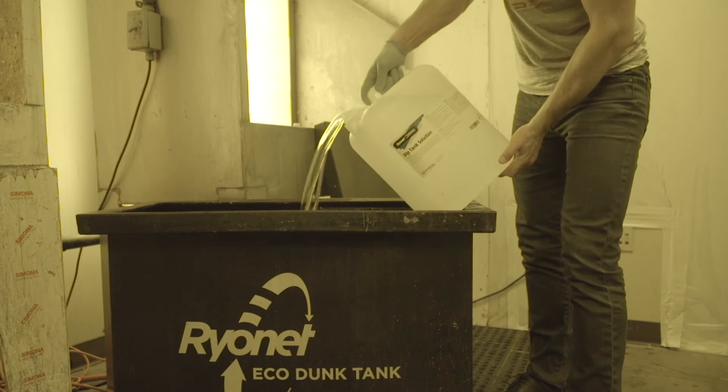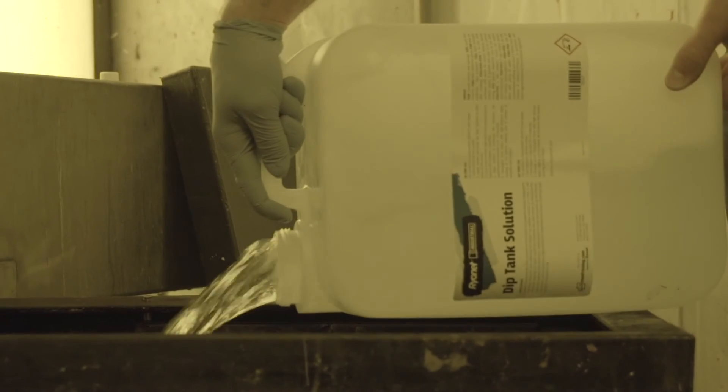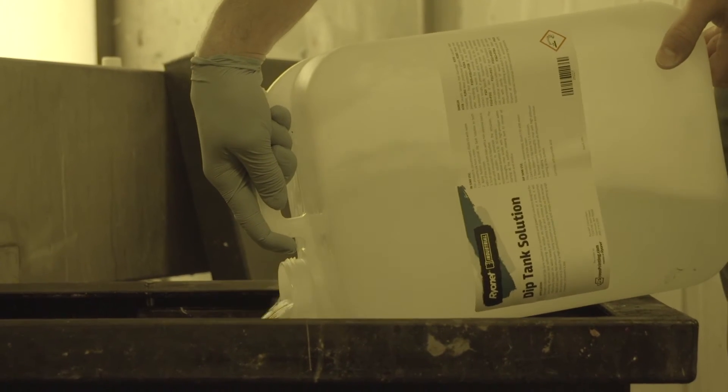This dip tank solution typically comes in a 5 gallon pail or a drum and should be mixed 10 to 1, so 5 gallons will fill up a 50 gallon tank.